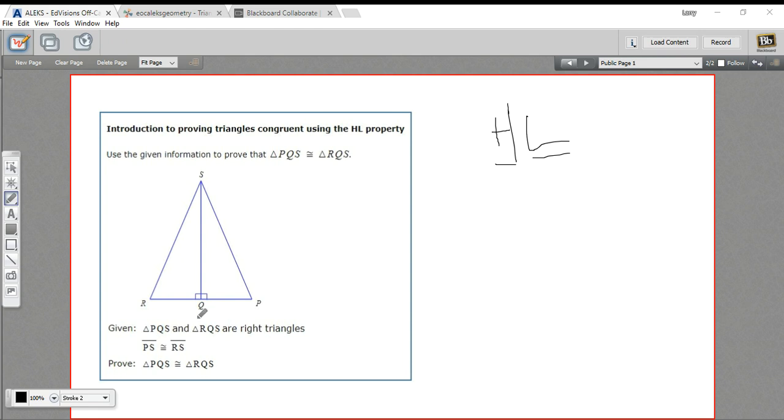So let's take a look at our diagram and our given information and sketch anything in that we need to here. First of all, it says that PQS and RQS are right triangles. We've got this little right angle symbol down here. So that's good. That means we can apply the HL property.